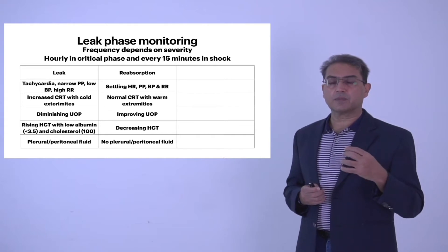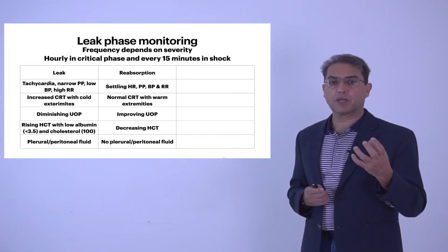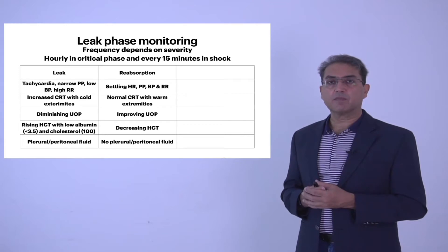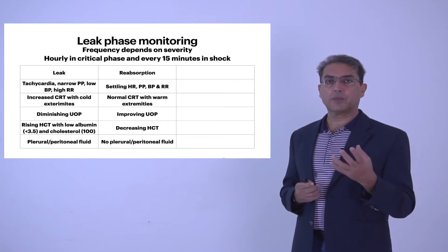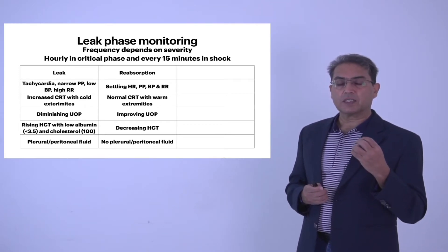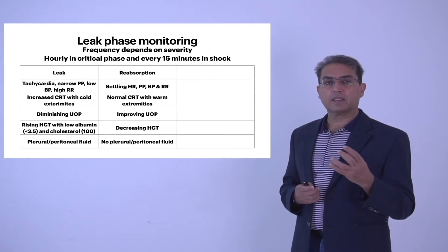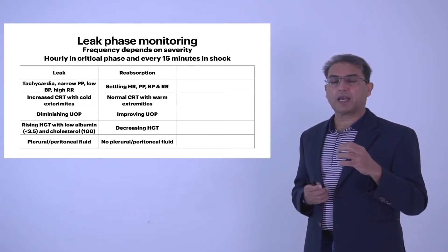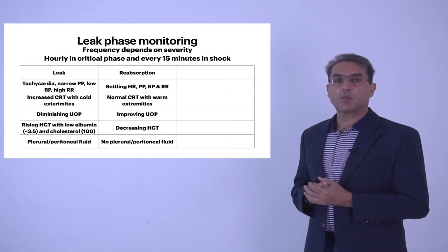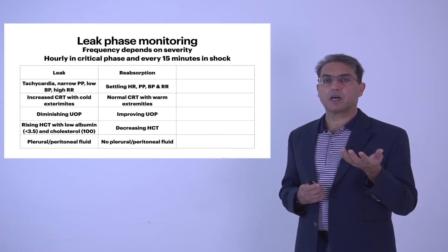The respiration becomes normal, capillary refill time becomes normal, extremities are now warm, urine output improves, and the hematocrit starts falling. Abdominal or peritoneal fluid starts disappearing.